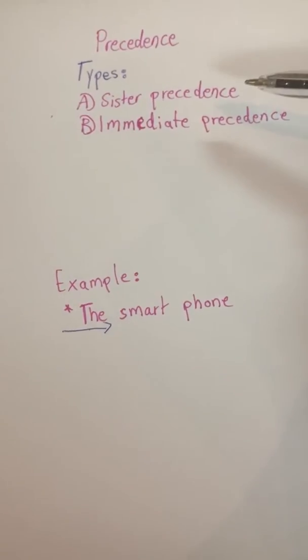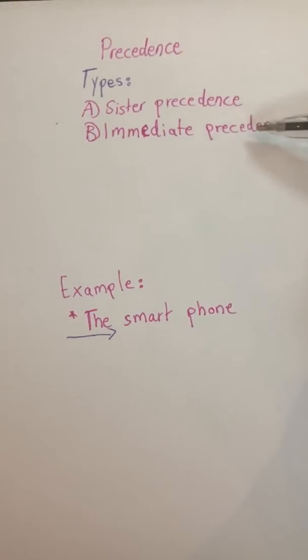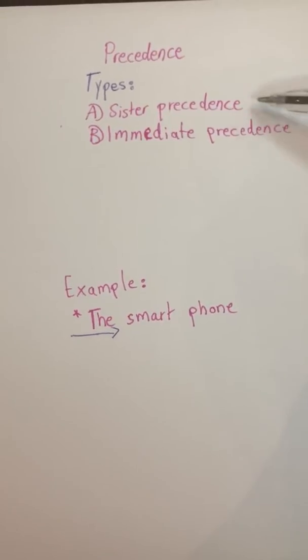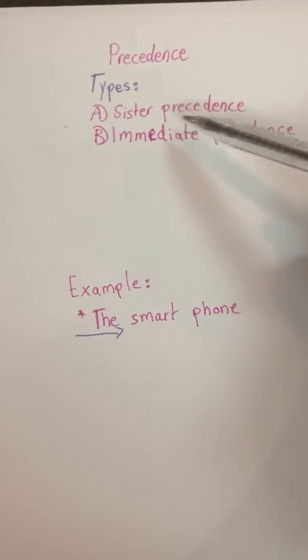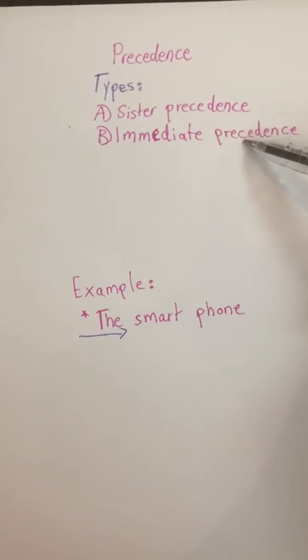Now let's take a look at its types. We have two types of precedence: sister precedence and immediate precedence.